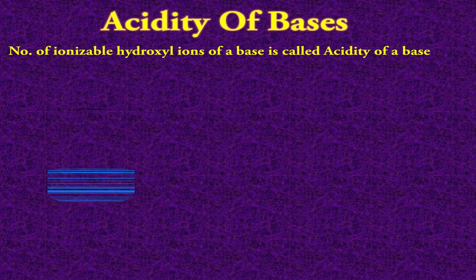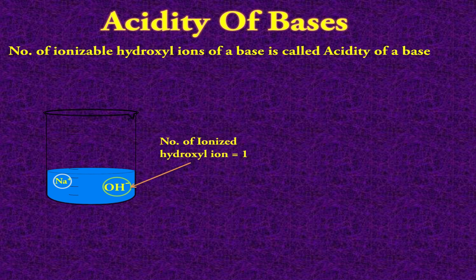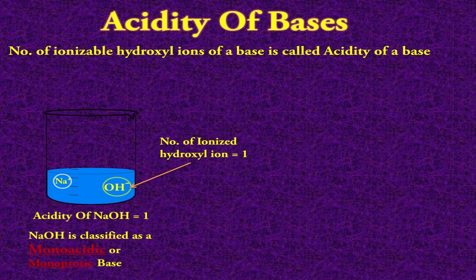Let's take the example of a base — sodium hydroxide, also known as caustic soda. Whenever sodium hydroxide is ionized in water, it gives two ions: Na⁺ and OH⁻. The number of ionized hydroxyl ions is 1, which shows the acidity value of sodium hydroxide is 1. On the basis of its acidity value, it is classified as a monoacidic or monoprotic base.